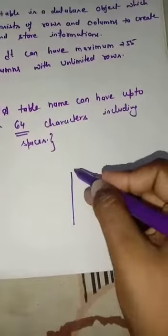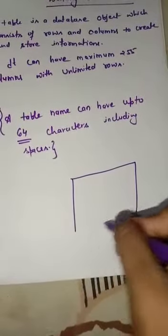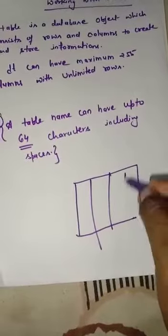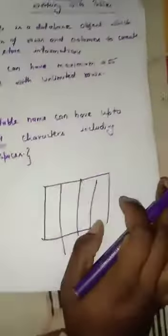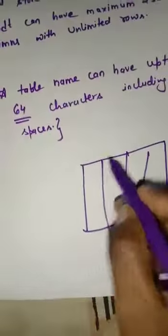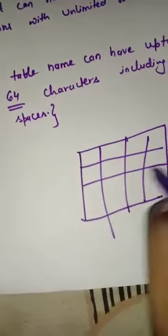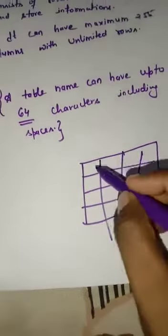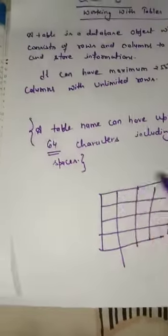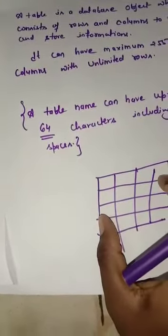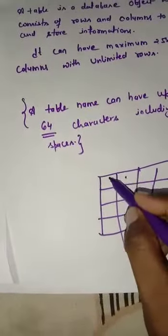As you all know, this is a table and it is made by rows and columns. As you can see, these lines are known as rows and these are columns. This is called a table. When rows and columns meet, they make a cell, and a collection of rows and columns makes a table.